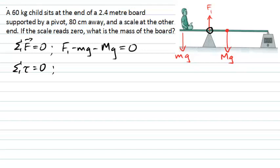So the only torques we need to consider now are the torques from the weight of the child, and the torque from the weight of the board. Let's call this distance between the child and the pivot point D1, and let's call this distance between the board's centre of mass and the pivot D2.